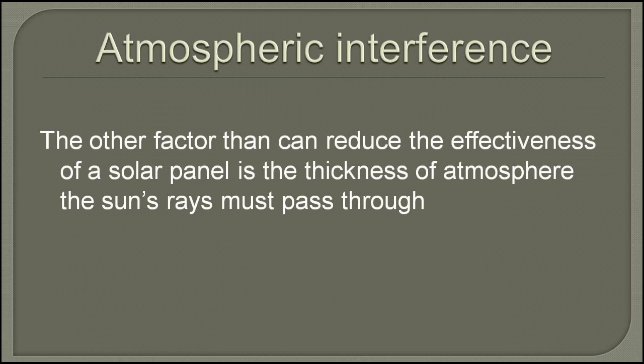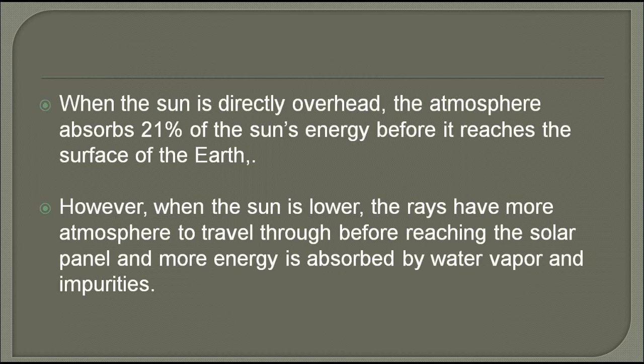Another factor that can reduce the effectiveness of a solar panel is the thickness of atmosphere the sun's rays must pass through. When the sun is directly overhead, the atmosphere absorbs 21% of the sun's energy before it reaches the surface of the earth. However, when the sun is lower, the rays have more atmosphere to travel through before reaching the solar panel, and more energy is absorbed by the water vapor and impurities.